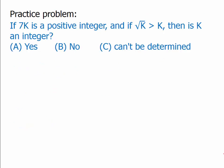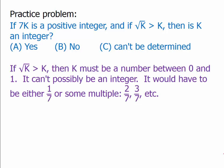Here's a practice problem: if 7k is a positive integer, and if square root of k is greater than k, then is k an integer? Well, if square root of k is greater than k, then k must be a number between 0 and 1 — it can't possibly be an integer. It would have to be either 1 seventh or some multiple of 1 sevenths: 2 sevenths, 3 sevenths, and so forth. So we absolutely know it cannot be an integer — the answer is B. There's nothing uncertain here; it absolutely cannot be an integer.